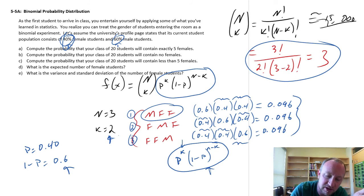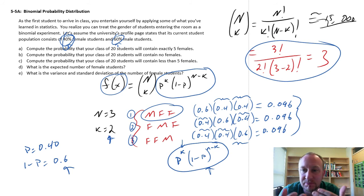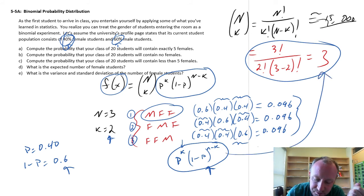So then in order to figure out the probability of that particular outcome occurring, it's the probability of each of those outcomes multiplied by the number of possible outcomes. So in this exercise here, I'm going to have 3 times 0.096.